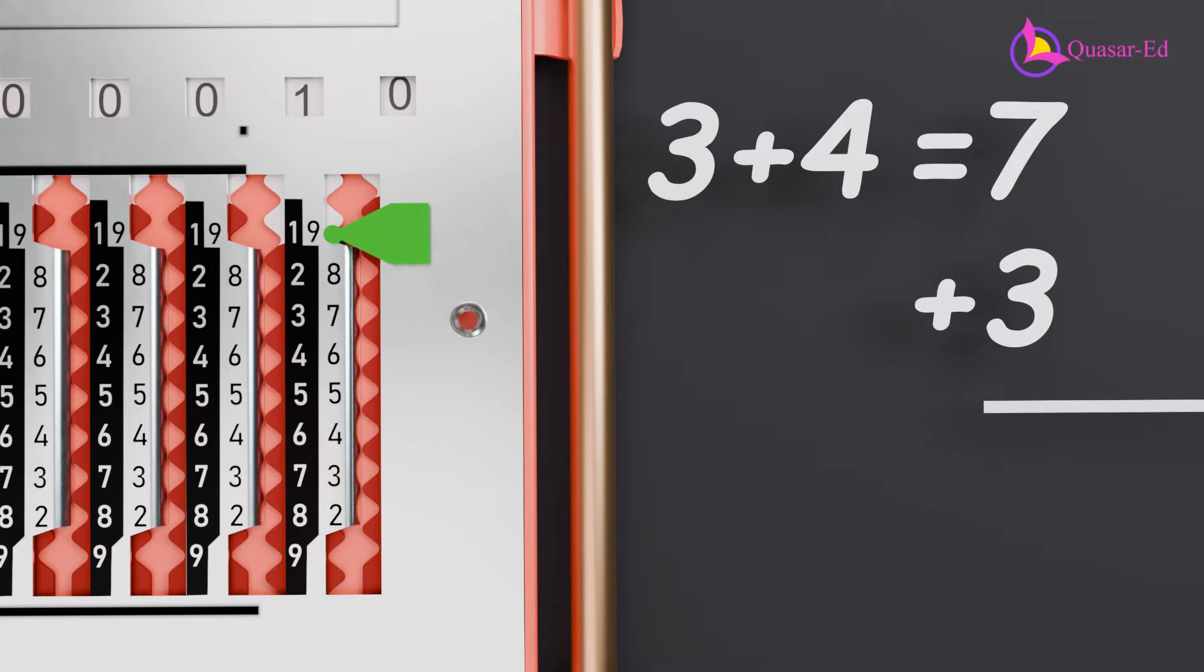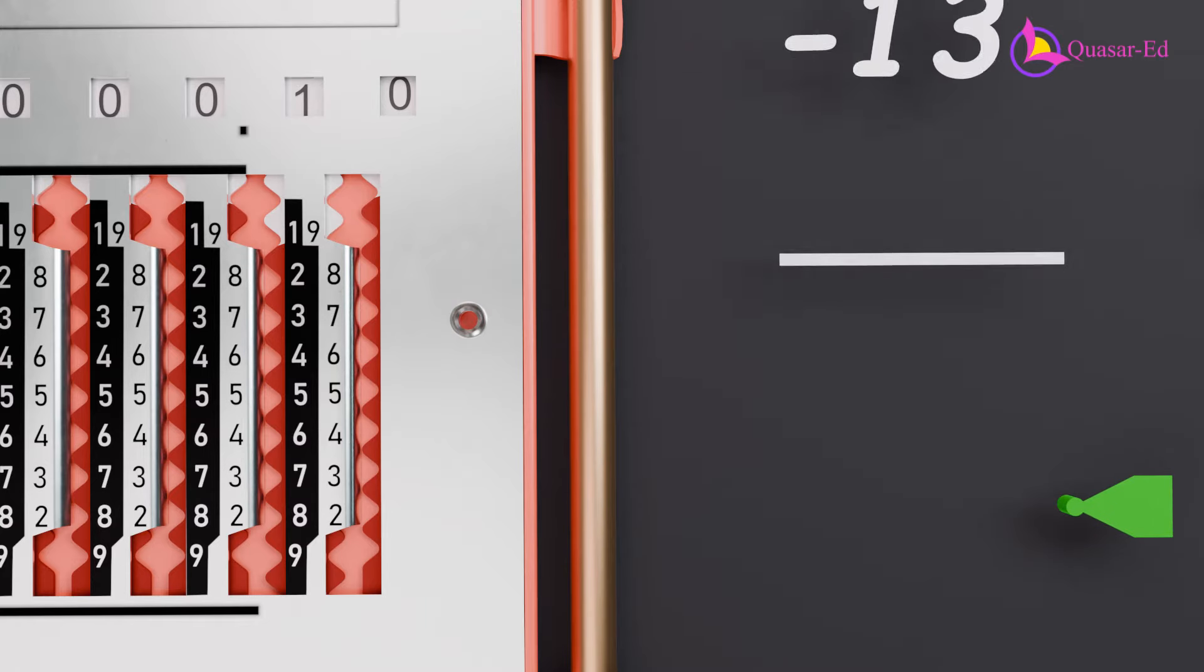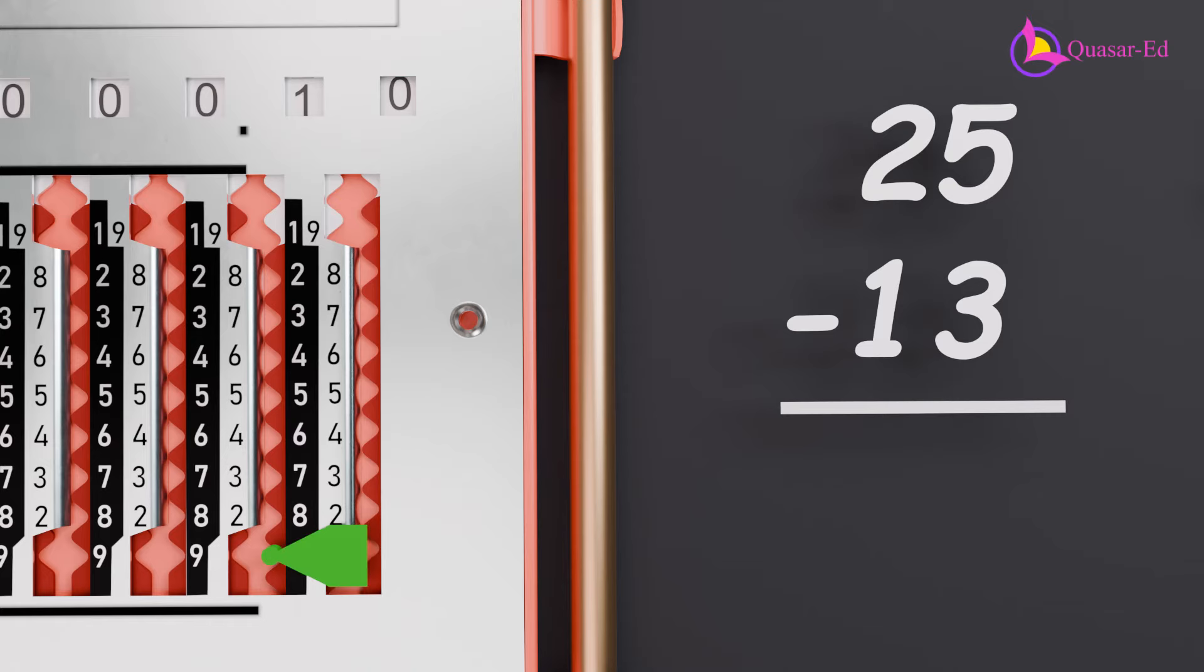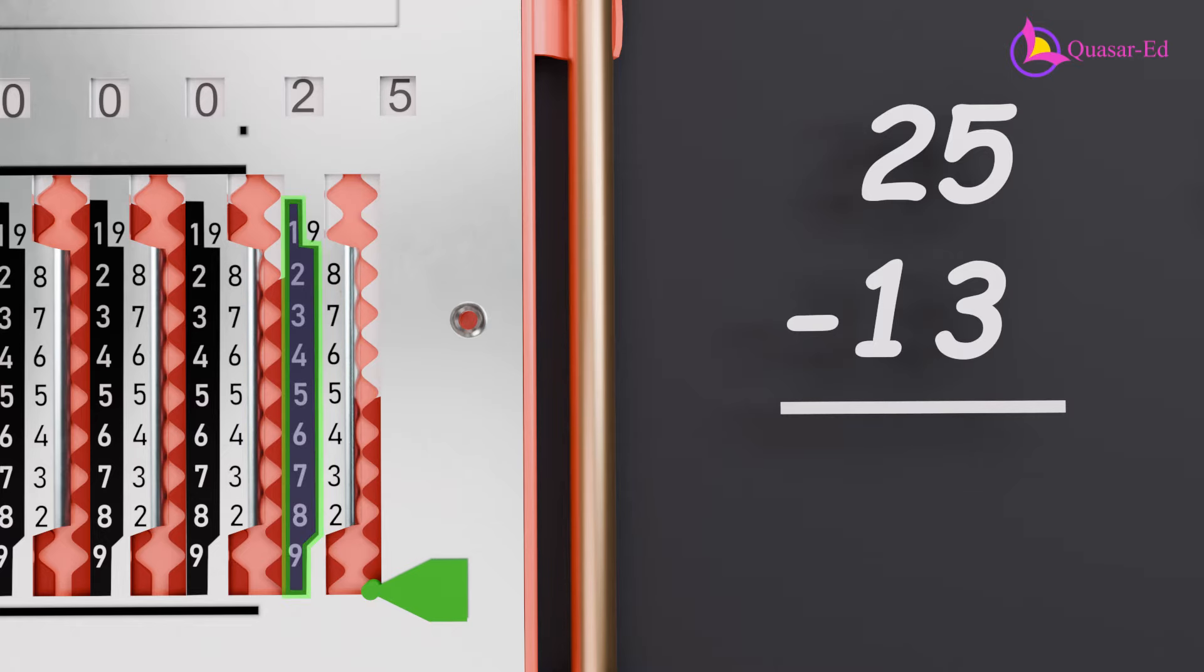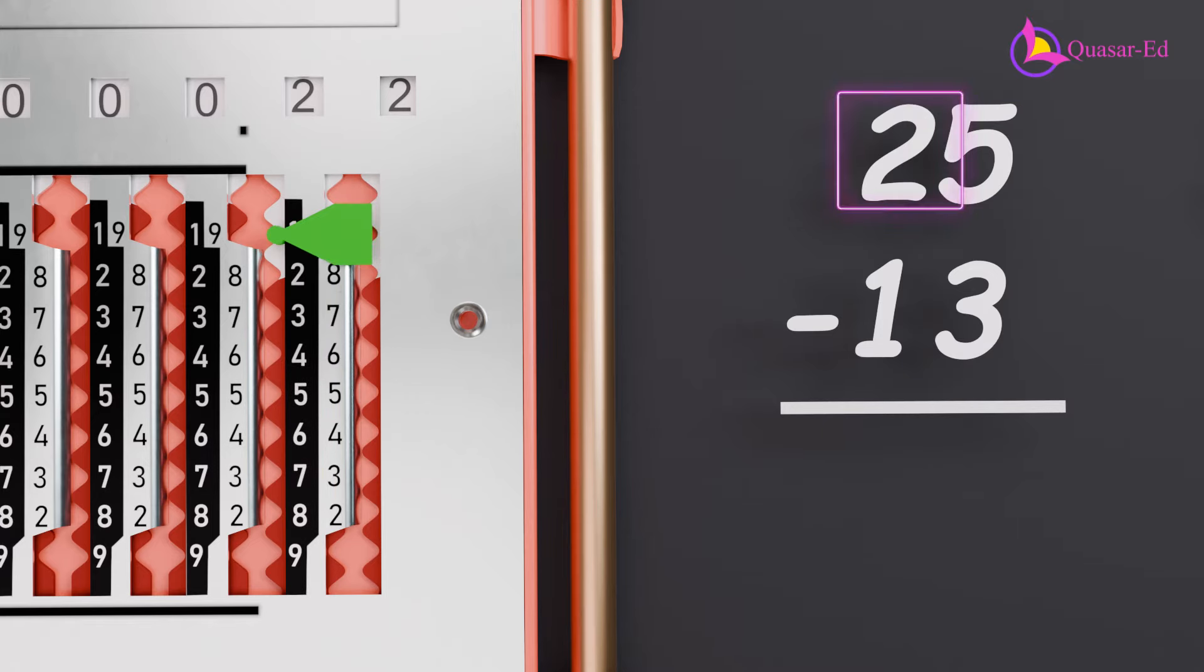To perform the subtraction of 13 from 25, we start by setting the input sliders to 2 and 5 in their respective columns. Next, we reference the left column for subtraction. Begin with the digit in the rightmost column, 5. We need to subtract 3 from 5. Since the sections are white, we pull up 3 on the slider for the digit 5, which gives us 2. Next, move to the left column, 2. We need to subtract 1 from 2. Again, since the sections are white, we pull up 1 on the slider for the digit 2, which results in 1.